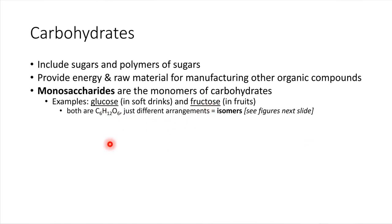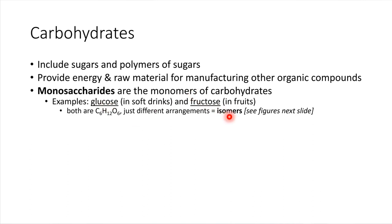Both of these monosaccharides have the same chemical formula — six carbons, twelve hydrogens, and six oxygens. However, the atoms are arranged a little bit differently. There's a name for this: if molecules have the same atoms just connected differently, they're called isomers. So glucose and fructose are isomers of each other.